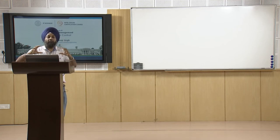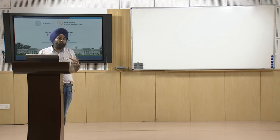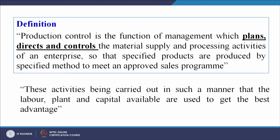All the sequence of operations to be followed to create the product is well known to management. Production control will focus on managing and controlling the operations so that the right product is processed by the right method in the right quantity and the delivery time is honored. These activities are carried out in such a manner that the labor, plant, and capital available are used to get the best advantage — ensuring optimal utilization of resources to derive maximum benefit.